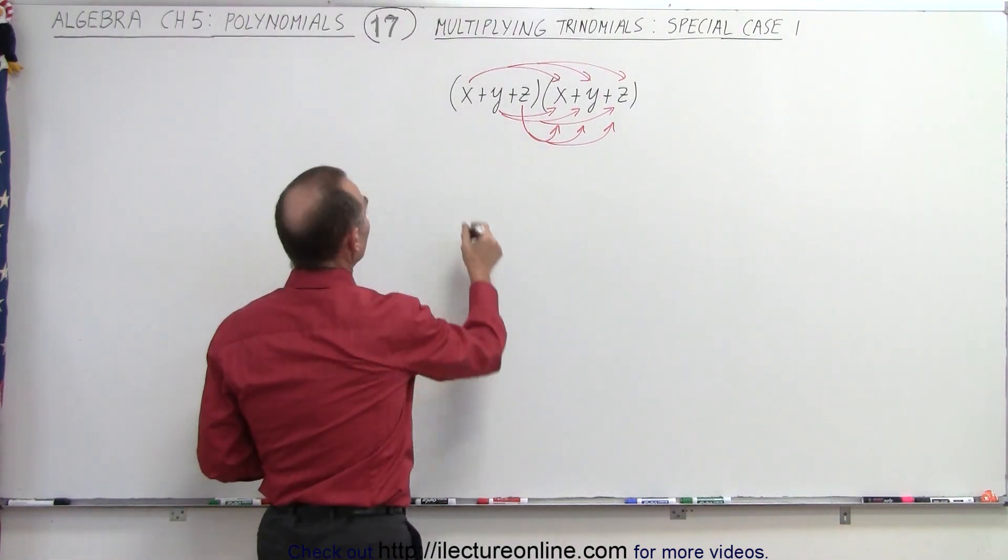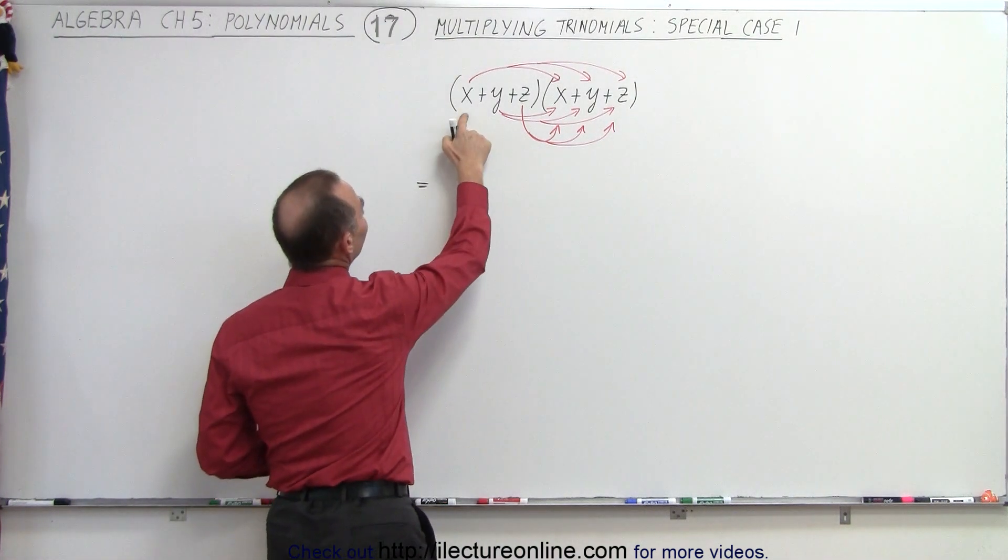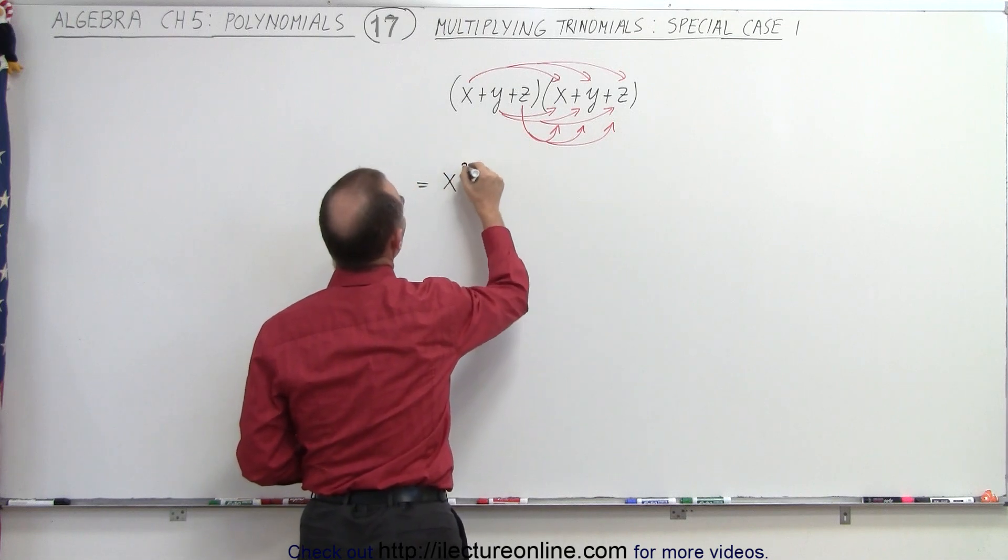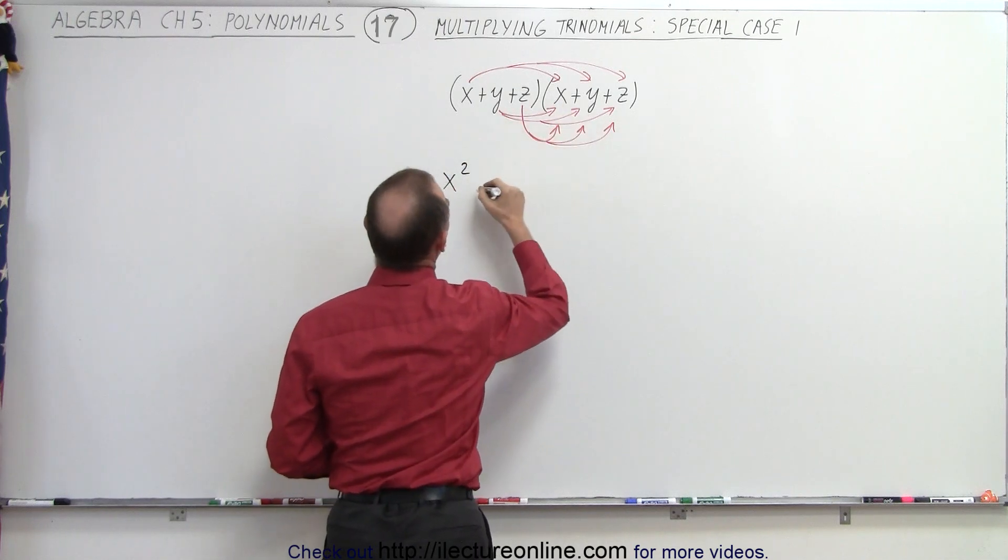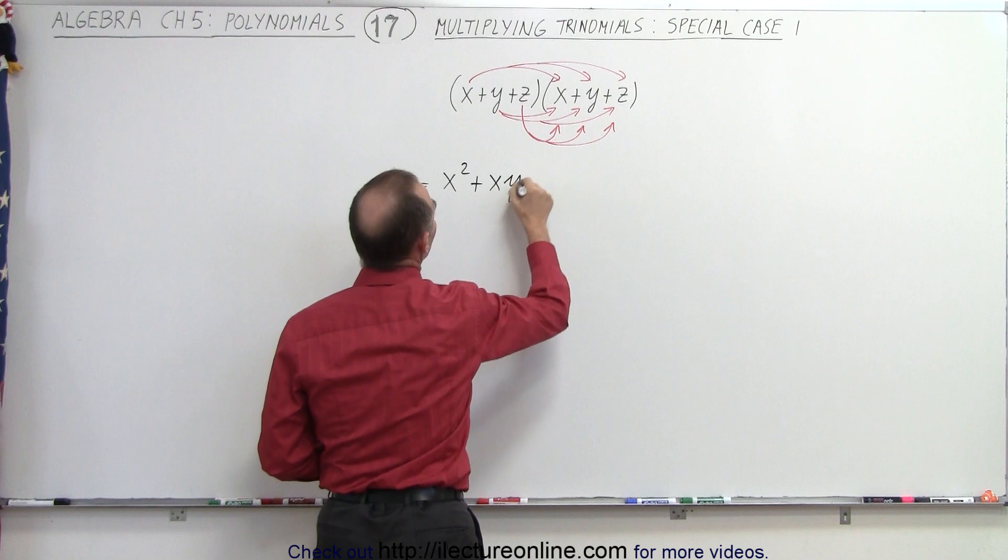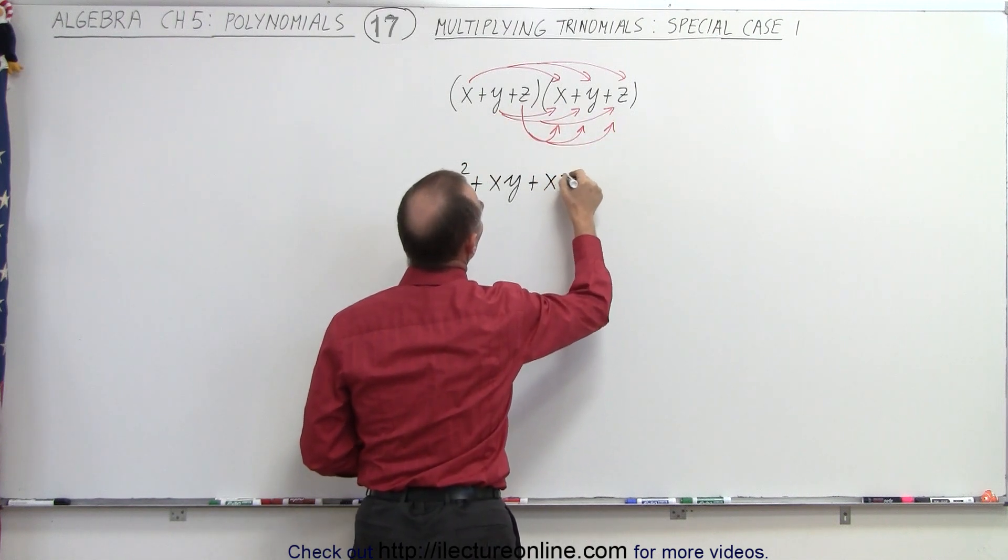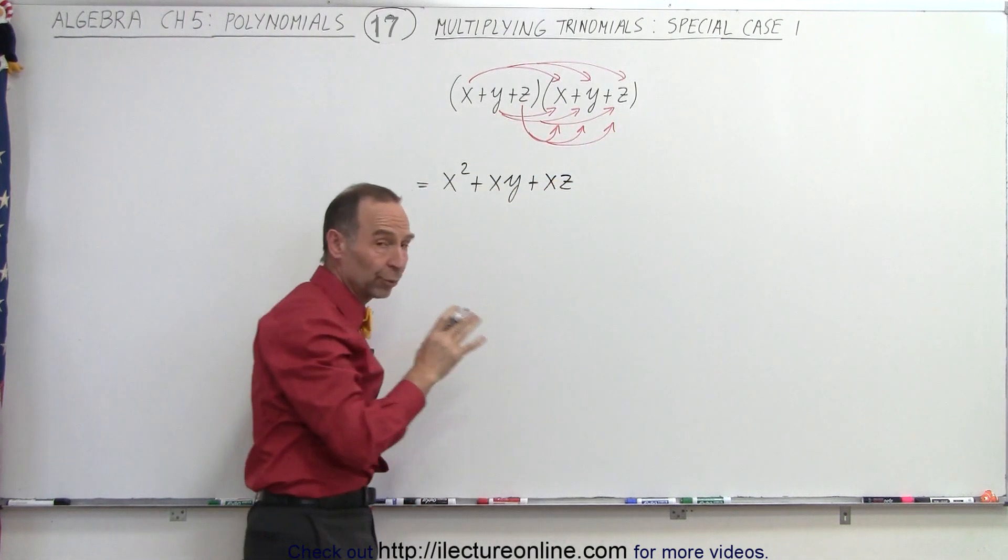Let's go ahead and do that. So this will be equal to x times x, which is x², x times y, which is +xy, and x times z, which is +xz. So now we have the first three terms.